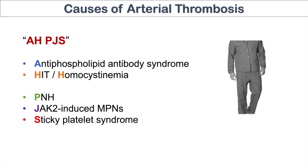These are the small subset of hypercoagulability causes that also cause arterial thrombosis. The others cause venous clots the majority of the time. So for arterial thrombosis, think APJs: antiphospholipid antibody syndrome, HIT and homocystinemia, paroxysmal nocturnal hemoglobinuria, JAK2-induced myeloproliferative neoplasms, and sticky platelet syndrome — these are the hypercoagulable causes of arterial clots.